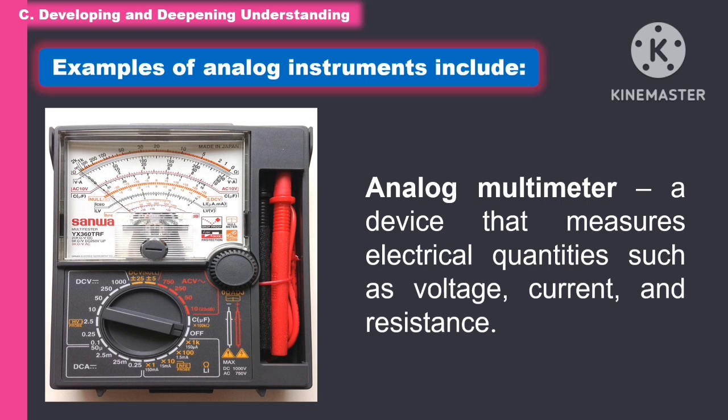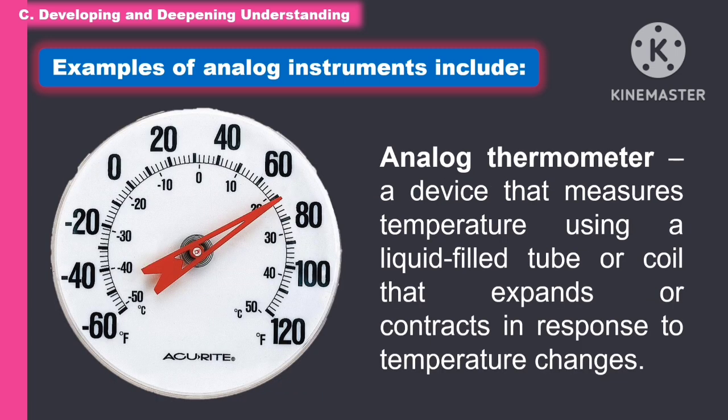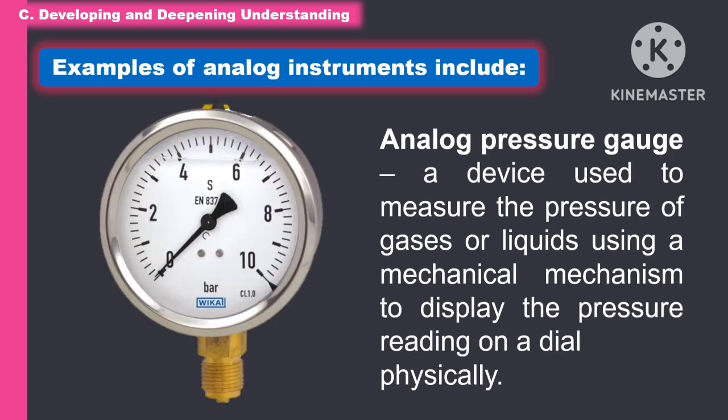The following are examples of analog instruments. The analog multimeter is a device that measures electrical quantities such as voltage, current, and resistance. Another example is the analog thermometer, a device that measures temperature using a liquid-filled tube or coil that expands or contracts in response to temperature changes.